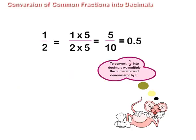To convert 1 upon 2 into decimals, we multiply the numerator and denominator by 5. Thus, we get 5 upon 10 which is equal to 0.5.